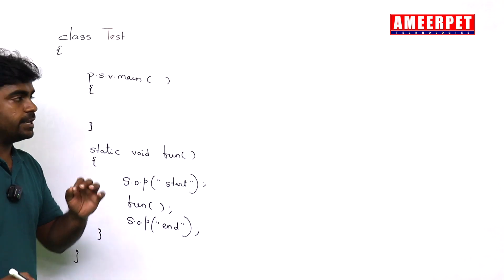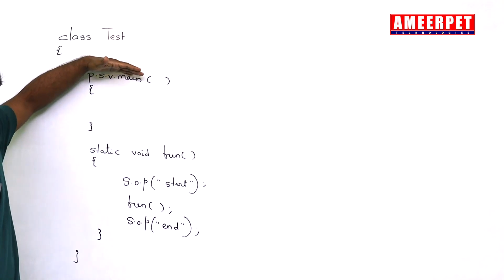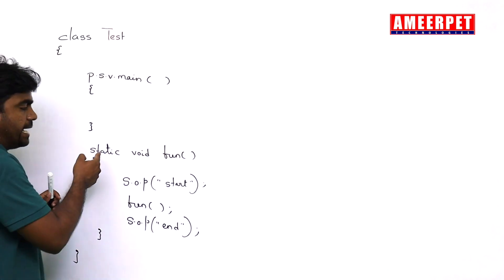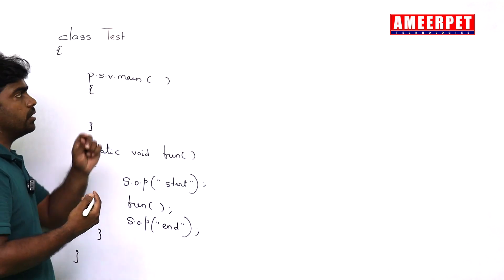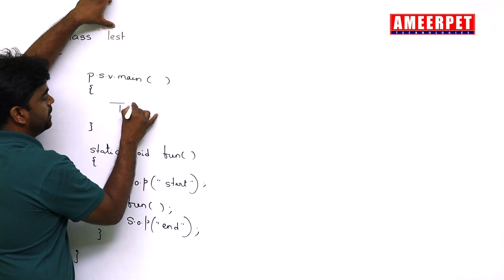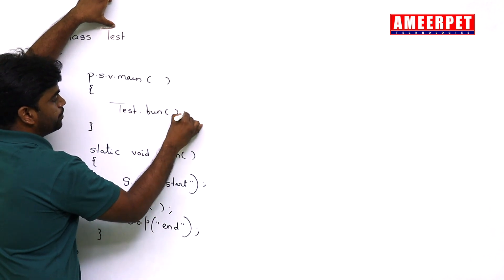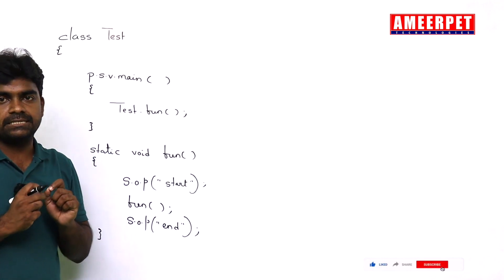First, program execution starts from the main. From the main, now I am calling this fun method. It is a static method. Within the class, of course, you can access directly or you want to follow the rule class name. Just I am calling test.fun. How the program gets execute?